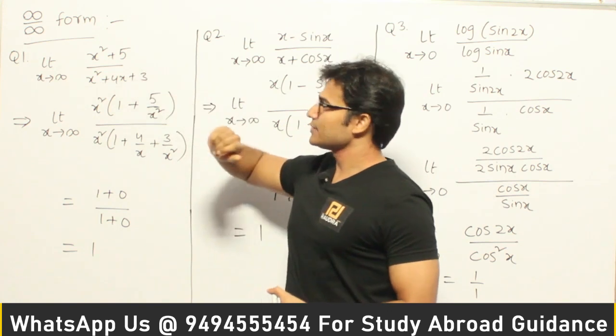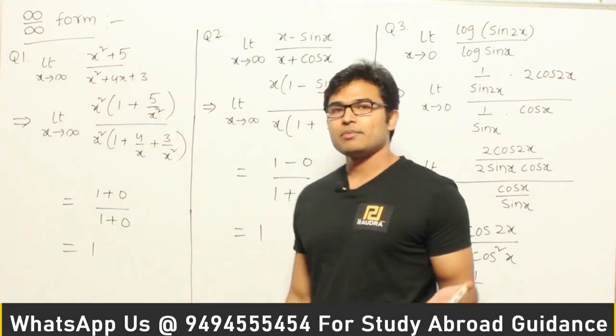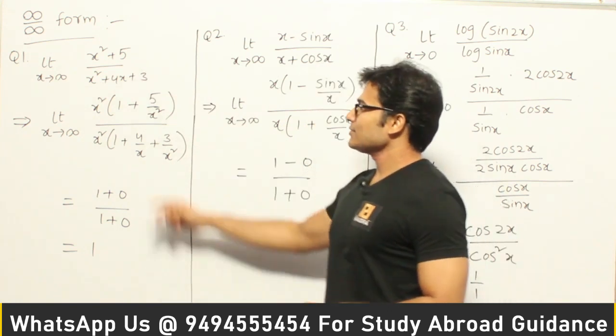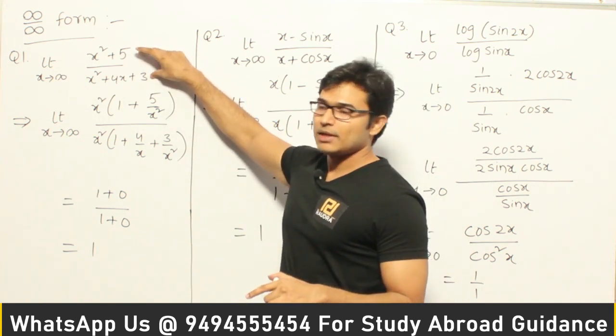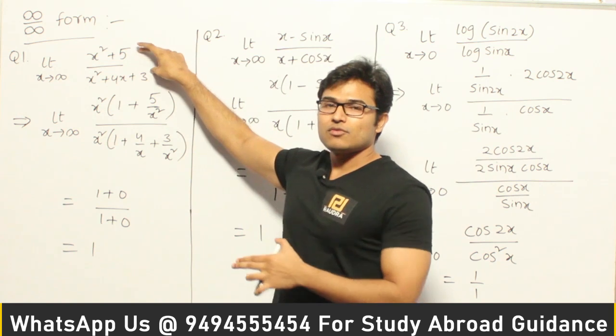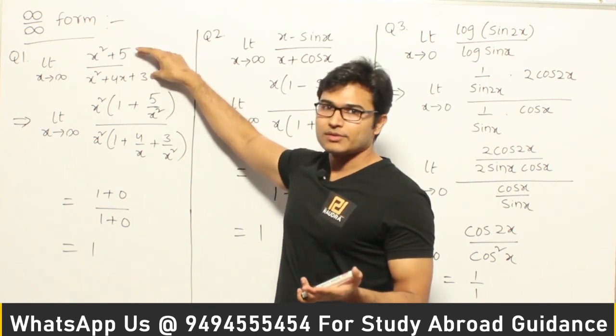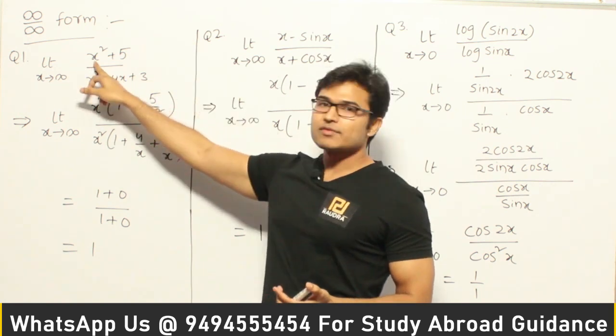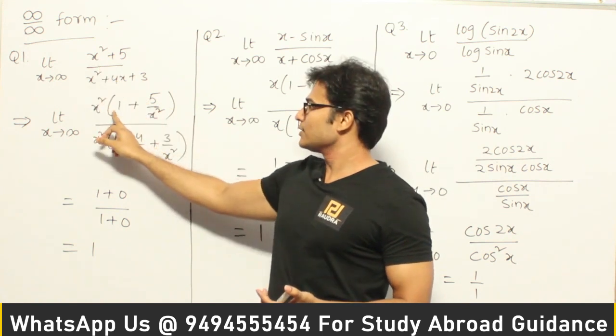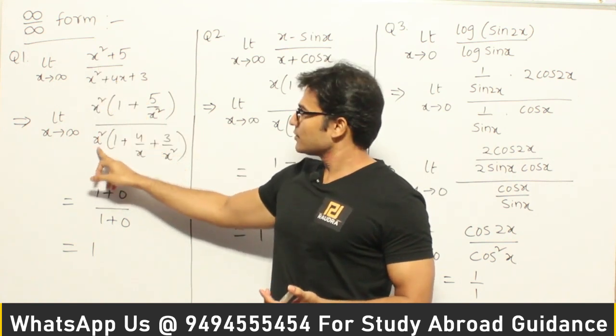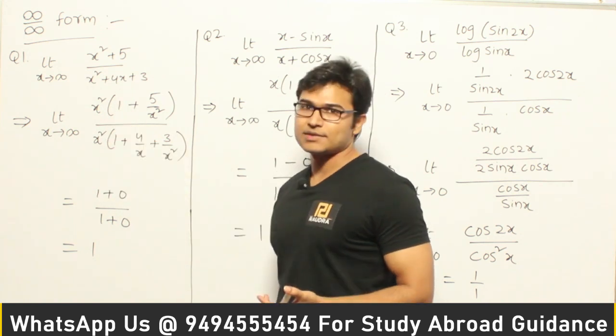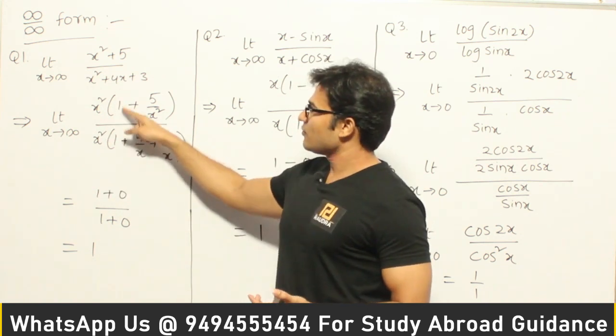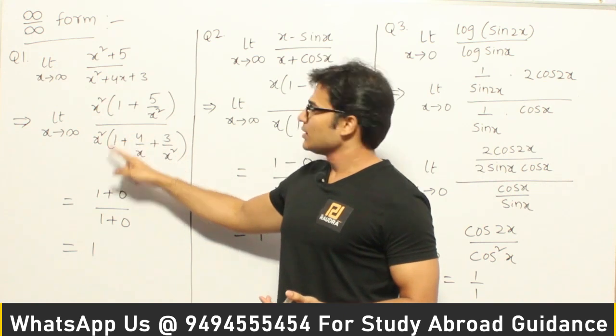So how to solve it? See, one thing is you can apply L'Hôpital's rule, but since both the functions are of polynomial type, you can try pulling out something as common, just see if it works. Now if I pull out x² as common, then I get this function. If I pull out x² as common from denominator, I am going to get this function. x² and x² gets cancelled and now you are going to get 1 and 1 in the leading term, right?